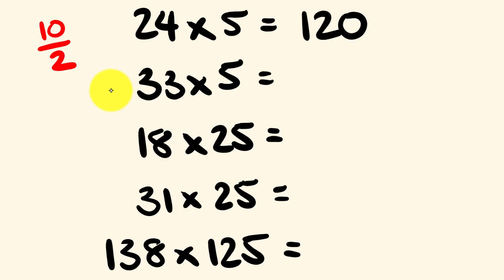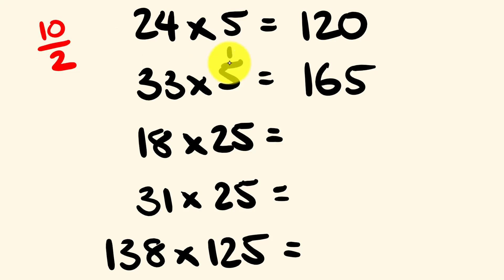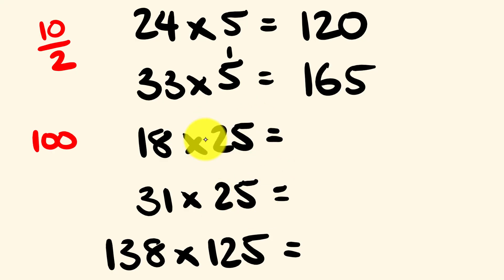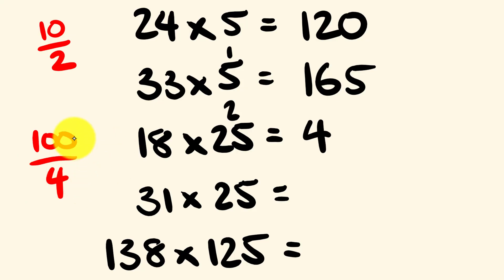Next, 33 multiplied by 5. We go 33 divided by 2, which gives 16 with 1 remainder. 1 times 5 is 5 — put that on the end: 165. Now for multiplying by 25, since 25 equals 100 divided by 4, we divide by 4 first. 18 times 25: 18 divided by 4 is 4 with 2 remainder, since 4 times 4 is 16. 2 times 25 is 50 — put that on: 450.